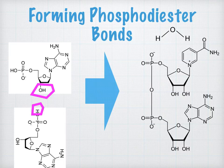The structure of DNA is described as having a sugar-phosphate backbone because those are the groups involved in forming the phosphodiester bonds. This leaves the nitrogenous bases free to pair with other bases in the molecule.